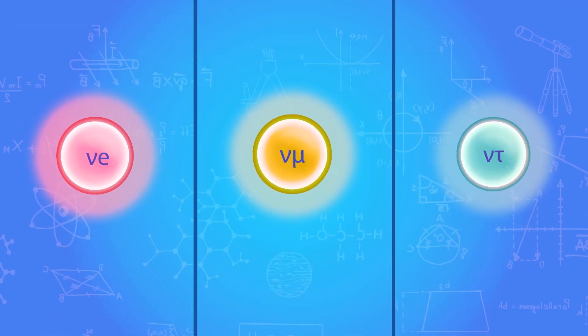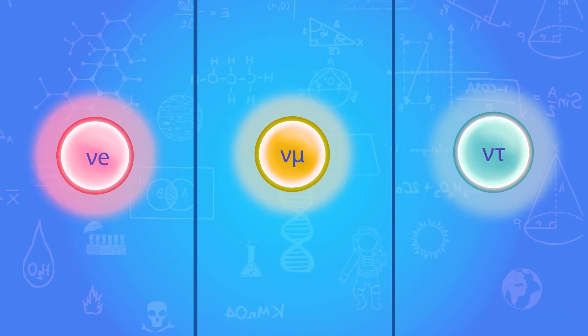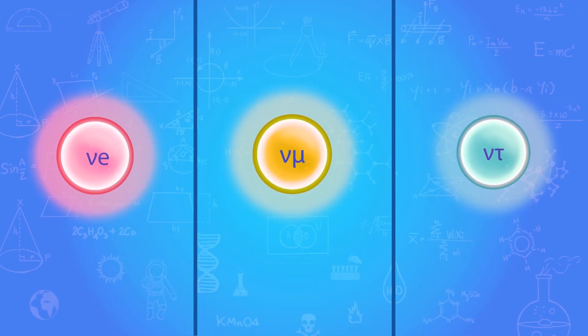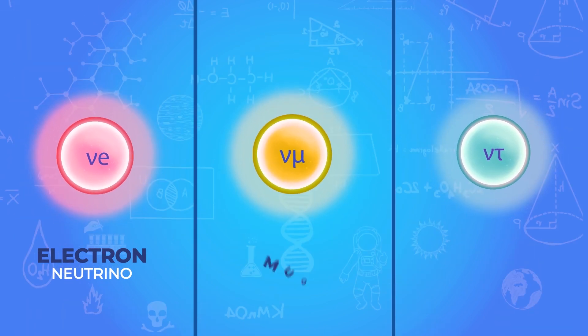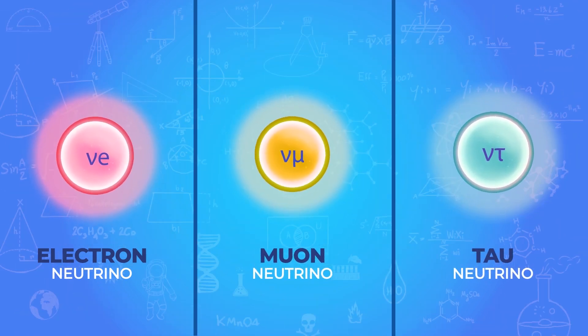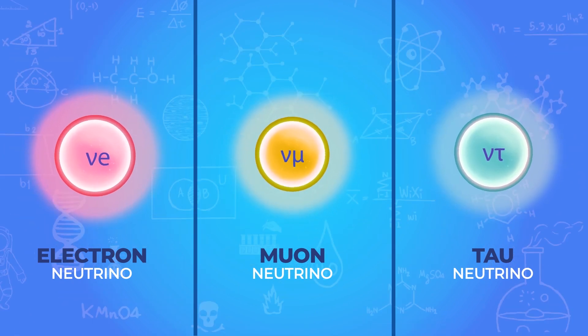There are three different types or flavors of neutrinos, each of which is related to a type of electron. The simplest is the electron neutrino, which is associated with electrons, and the other two, the muon and tau neutrinos, are associated with heavier versions of electrons.